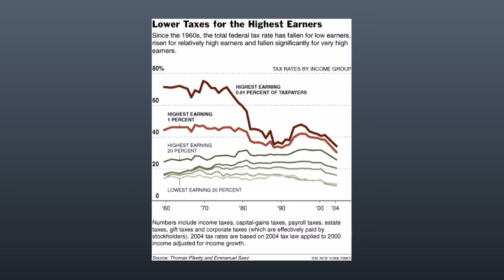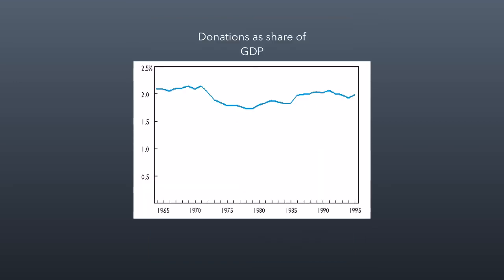The question is: is that actually true? This next chart shows basically the same time period during which those tax rates changed dramatically. What you can notice is that donations as a share of GDP did not actually change all that much. For as long as the United States has tracked it, people donate about 2% of their income. This is basically evidence that tax rates probably don't influence whether or not people donate to charity, which in turn means the tax deduction may not be as powerful a policy as we think in encouraging people to donate.